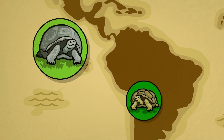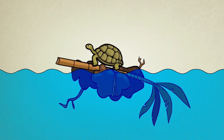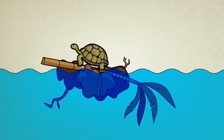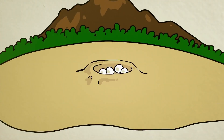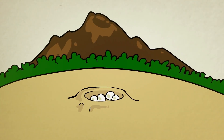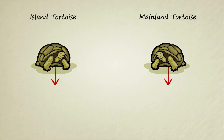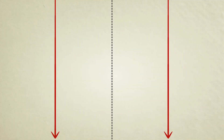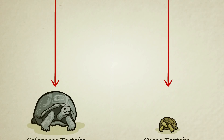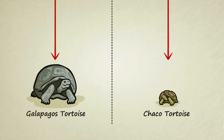Darwin believed these similarities could be best explained through common descent. Long ago, a tortoise from the mainland may have drifted to the islands, possibly on a raft of storm debris, and once arriving, laid her eggs. Random changes caused by descent with modification over thousands of years eventually transformed the island creatures and the mainland creatures so much that they could no longer be considered the same species.